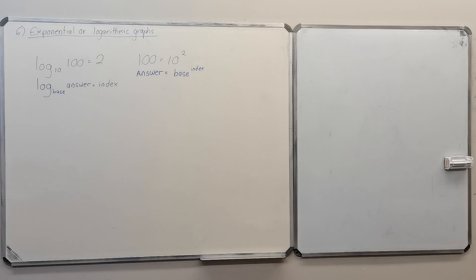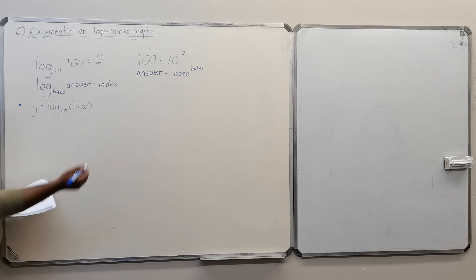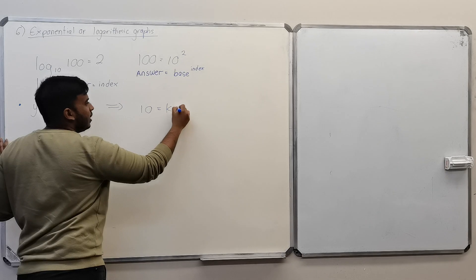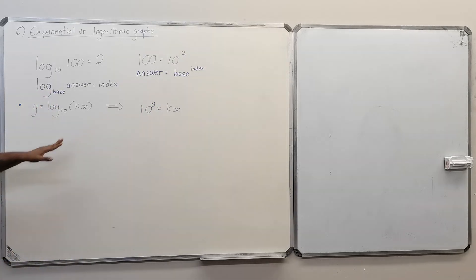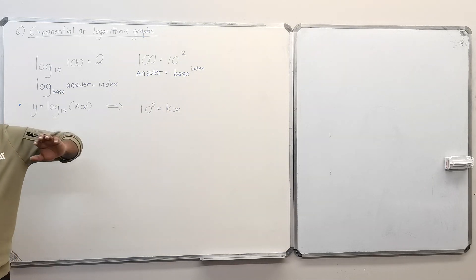The general formulas here that you could see for a logarithm graph would be y = log₁₀(kx). If you had to convert this into an exponential form, what would it be? Your base would be 10, your answer is kx, and your index is y. That would be the exponential form: 10^y = kx. Log base answer equals index.